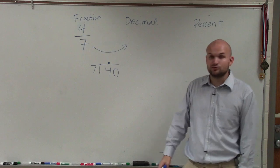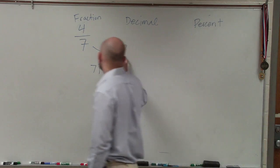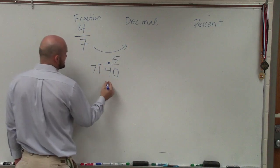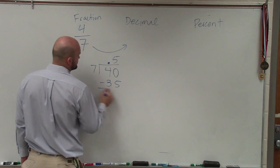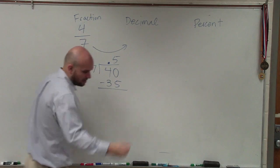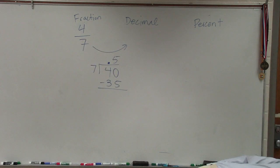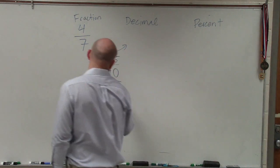7 does go into 40. It goes in there five times. 5 times 7 is 35. Subtract the two numbers, which is going to give me 5.